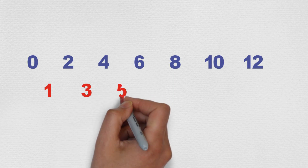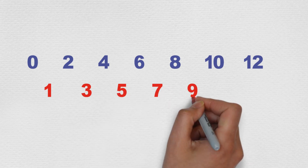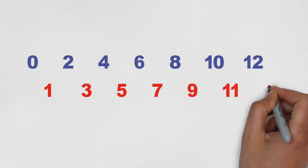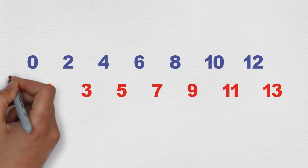When you start from 1 and count by 2's, you count all the odd numbers: 1, 3, 5, 7, 9, 11, 13, and so on.